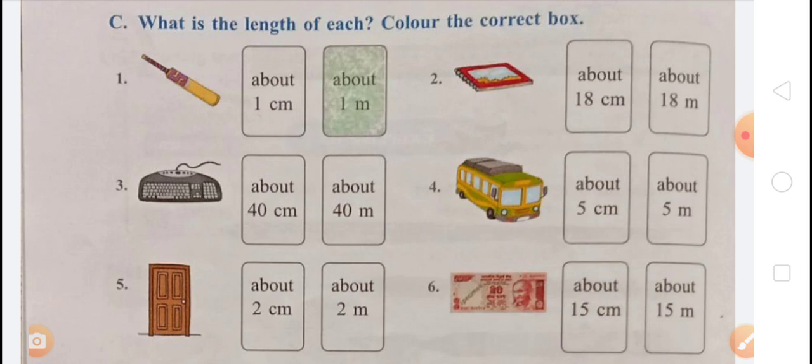The door is about two meters, so color the 'about two meter' box. The 20-rupee note is about 15 centimeters. To recap: bed — about 1 meter; disc — 18 cm; keyboard — 40 cm; bus — 5 meters; door — 2 meters; 20-rupee note — 15 centimeters.